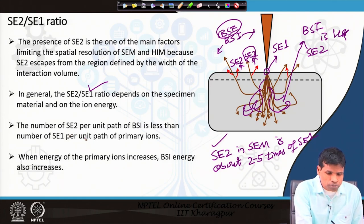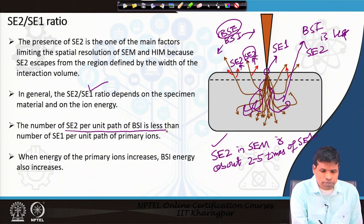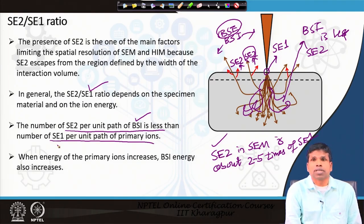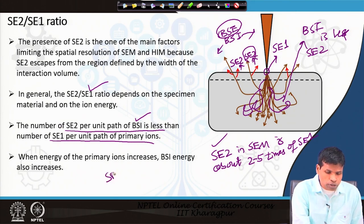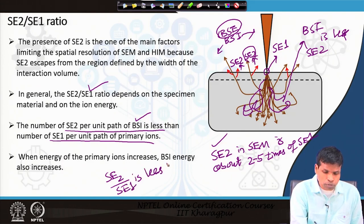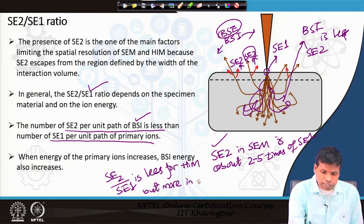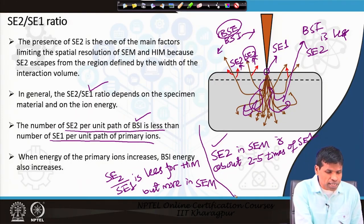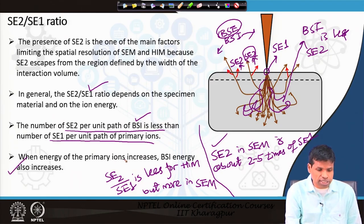The number of SC2 per unit path of backscattered ions (BSI) is less than SC1 per unit path of primary ions. So the SC2-to-SC1 ratio is less for helium ion microscope but more in scanning electron microscope. This is one of the main reasons for the higher surface resolution in helium ion microscope. When energy of the primary ion increases, backscattered ion yield also increases — the same is true for the electron case.